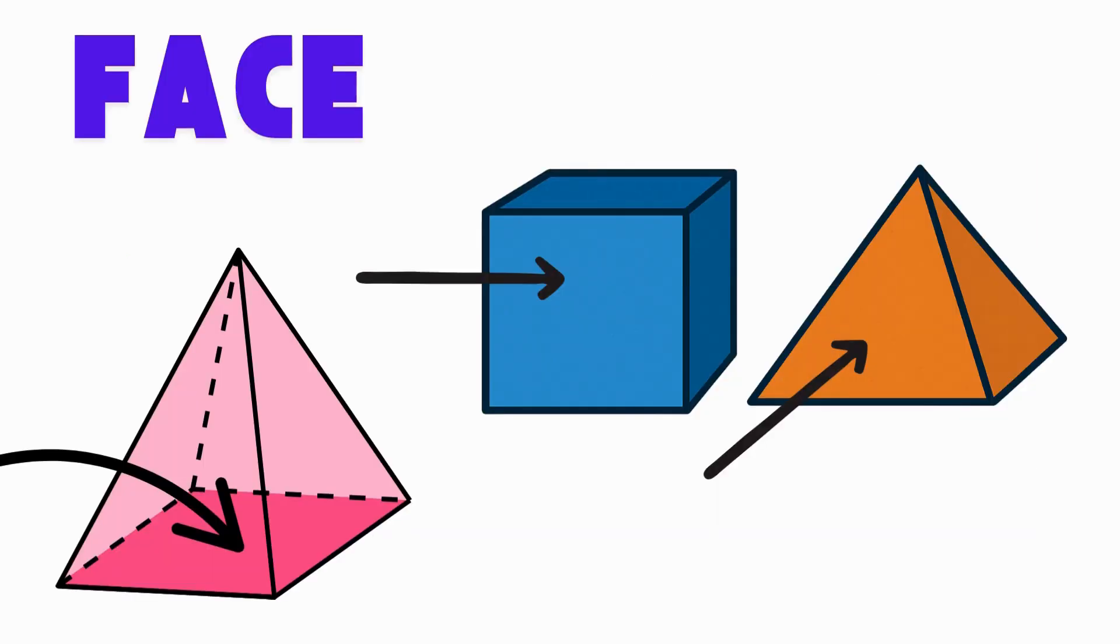A face is the flat part of a solid shape, like the side of a cube or the base of a pyramid. Say, face. Trace a square or rectangle in the air. It's a flat face.